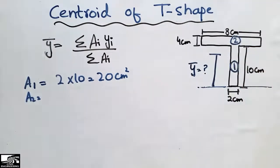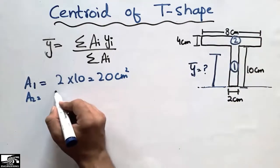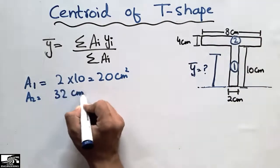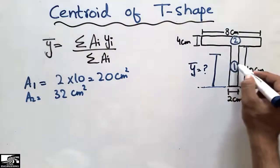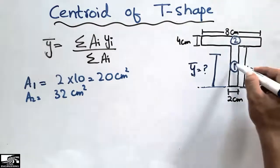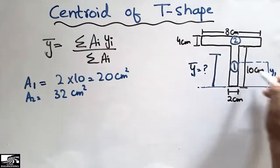The area of this object is 4 into 8, which is 32 centimeter square. The Y of the centroid of this object, it is in the center, so Y1 is 5 centimeter.